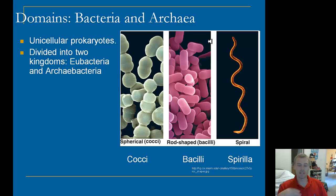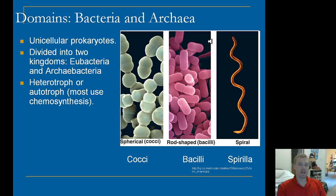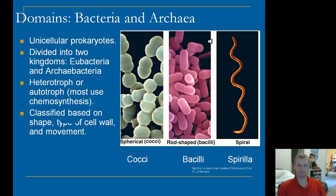Archaebacteria — think about what 'archae' means. Like archaeology, it means old. These are ancient bacteria that have been around for a very long time evolutionarily. They are not as advanced as eubacteria, but they have some very cool traits like being able to live in extreme temperatures, in hot springs, or in very salty conditions like the Dead Sea. They can be either heterotrophs or autotrophs — meaning they can either make their own food or consume other food. Many use chemosynthesis. Bacteria are classified based on shape, type of cell wall, and movement.